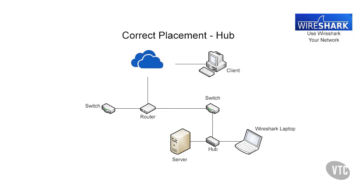The following image shows how to capture traffic from the external client to the server using a hub. Installing a hub between the server and the switch and then connecting the Wireshark laptop to it — Wireshark will then see all traffic going to and coming from the server. This will of course disrupt the network traffic while the hub is being installed and the cables connected.